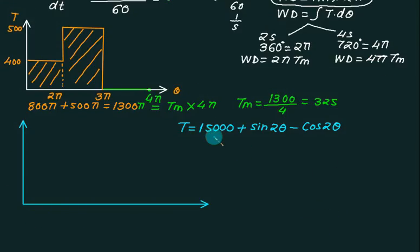T equals to torque at any time is dependent on crank angle theta. So this one is crank angle theta and this one is torque. Your value will fluctuate about 15,000 plus sine of 2 theta minus cos of 2 theta. Now you remember sine 2 theta and cos 2 theta over the period of 0 to 2 pi. They are cyclic. Cyclic means they will rise and they will fall. So in this case, the diagram will become like this.